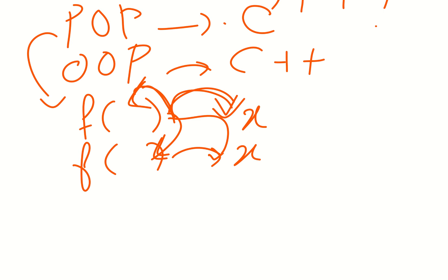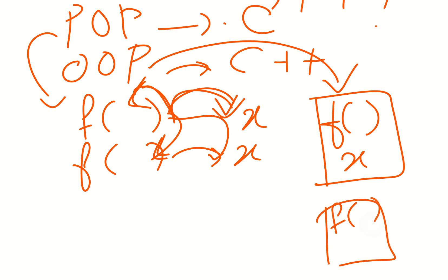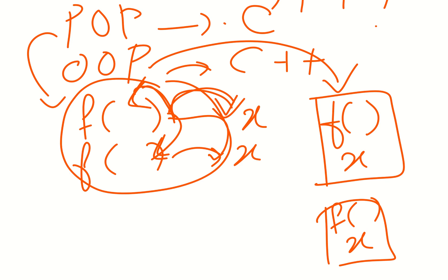In object-oriented programming, the program is divided into objects. In procedure-oriented programming, the program is divided using functions. The inter-dependencies between the data differ between procedure-oriented programming and object-oriented programming.